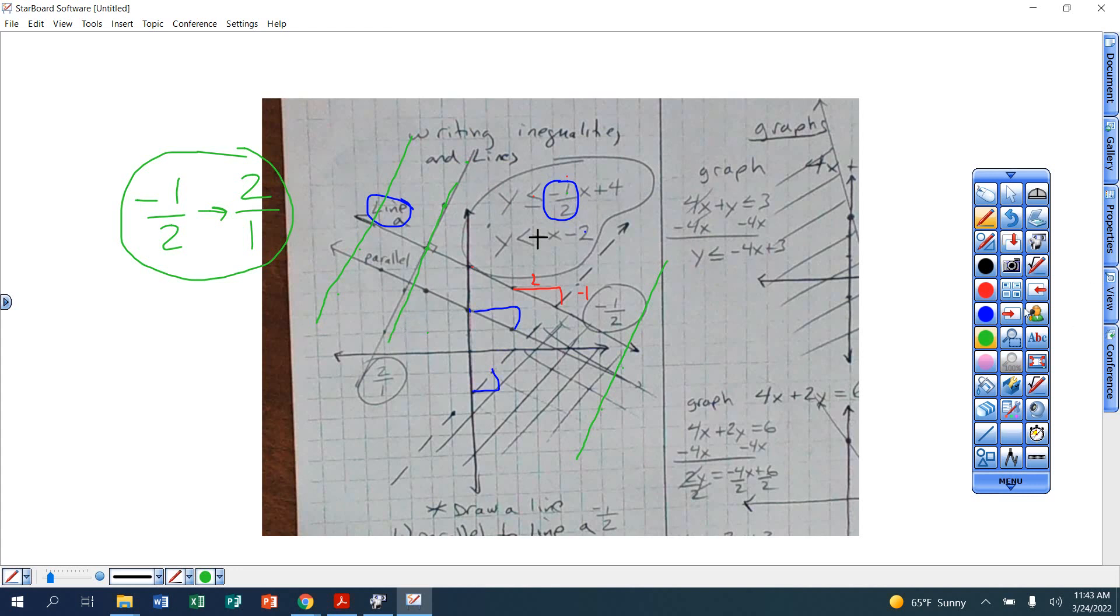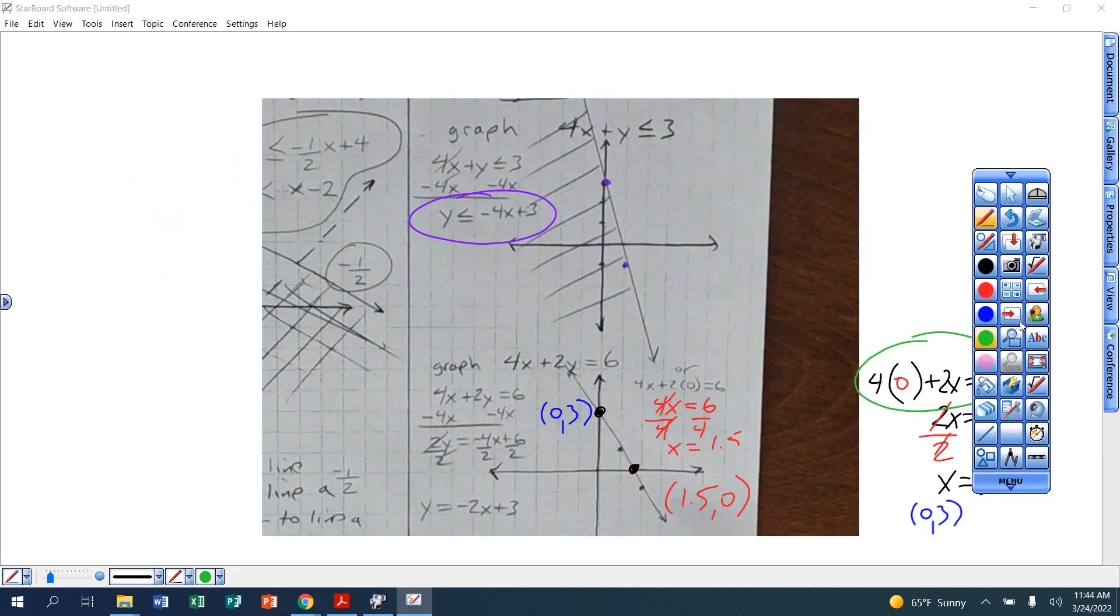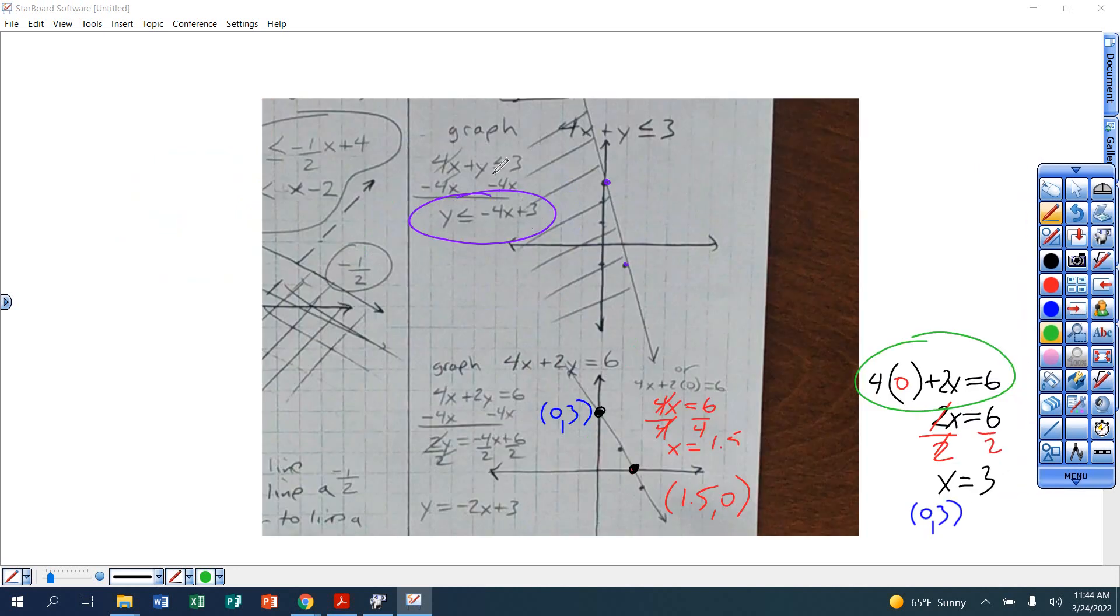Alright, this problem you had to graph this one by solving it for y first, and then of course over one down four from that number in front of x. Less than or equal to, solid line, shade below. For the other one, I showed how to do slope-intercept form, but I'm going to cross that off because I would like you to use this method where I plug in zero for y and solve for x.